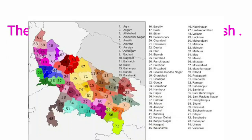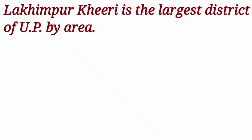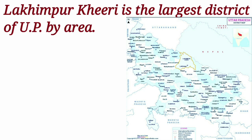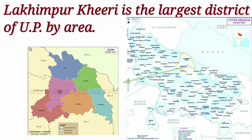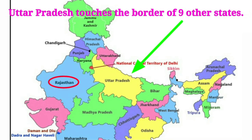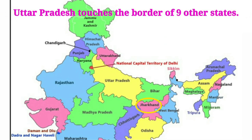There are 75 districts in Uttar Pradesh. Lakhimpur Kheri is the largest district of UP in terms of area. Uttar Pradesh touches the border of 9 other states.